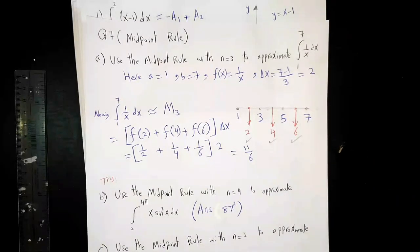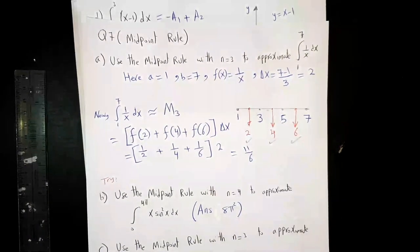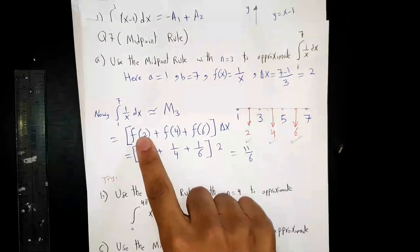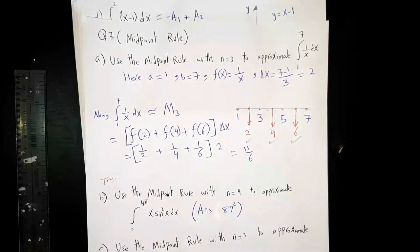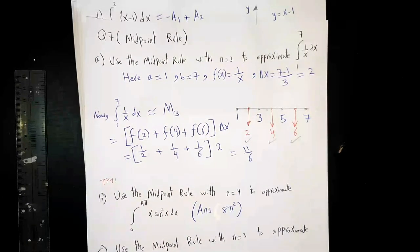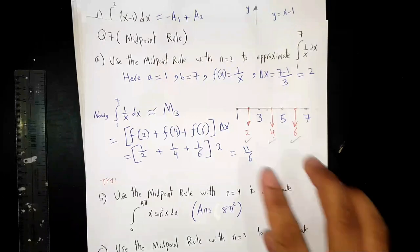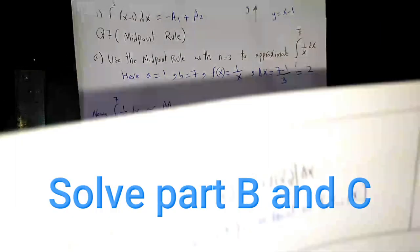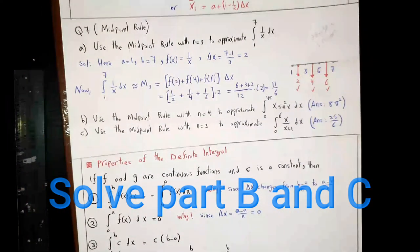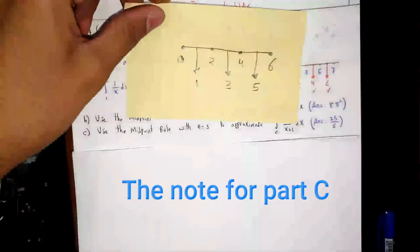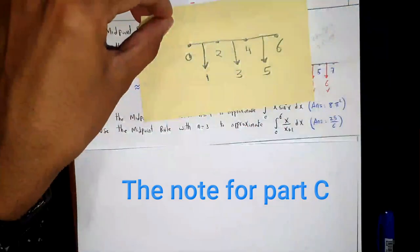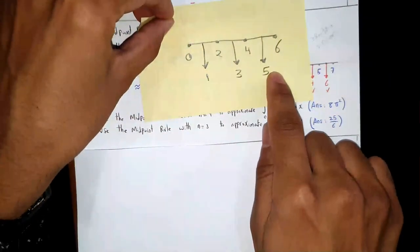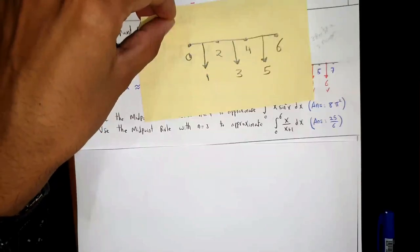Quick note: if the problem says use 3 subintervals (or 3 rectangles), make sure you have exactly 3 sample points — whether right, left, or midpoints. Now try the following exercise; stop the video and take 1 minute. The answer: sample at x = 1, 3, 5, multiply by Δx = 2, and you should get 25/6.